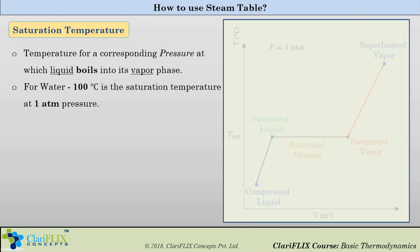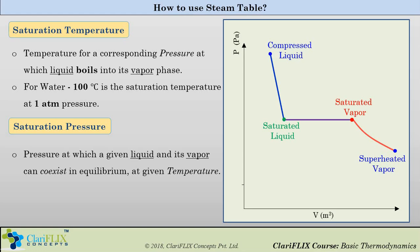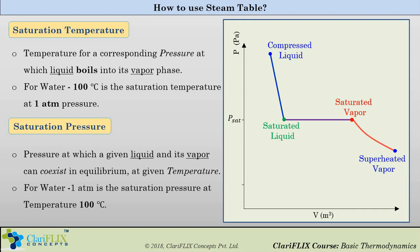Now let us understand what is saturation pressure. Saturation pressure is the pressure at which a given liquid and its vapor can coexist in equilibrium at a given temperature. Here you can see the P-V diagram and all these lines are the constant temperature lines. The green dot and red dot are saturated liquid and saturated vapor respectively. The pressure on that horizontal line is called saturation pressure where liquid and vapor can coexist together in equilibrium. For water, one atmospheric pressure is the saturation pressure at 100 degrees Celsius.